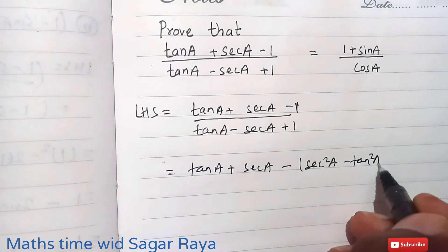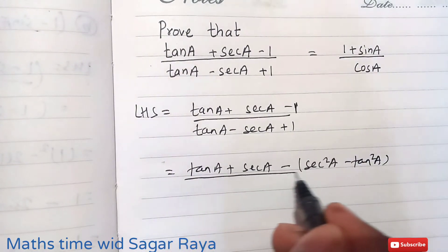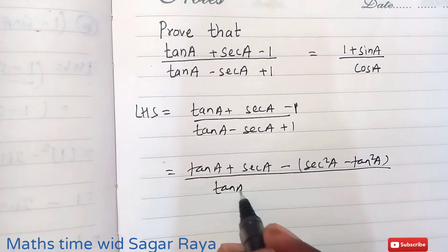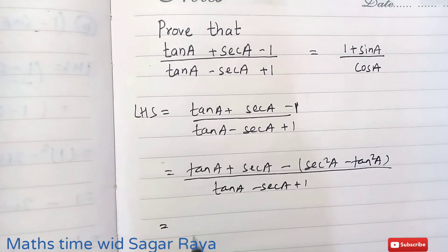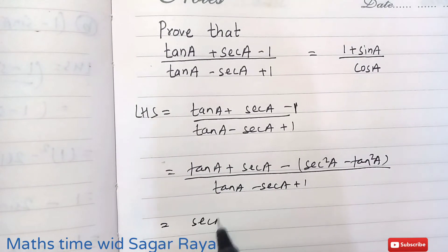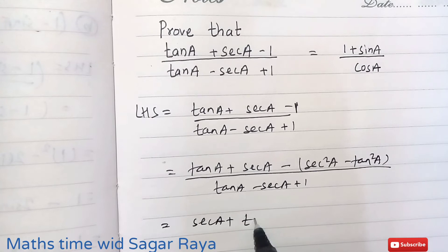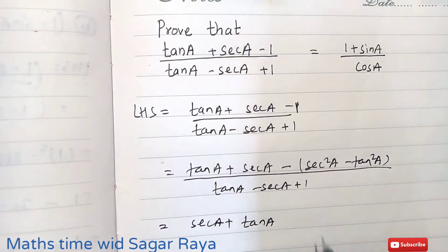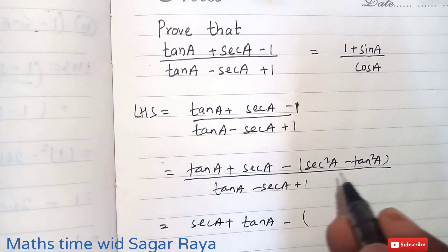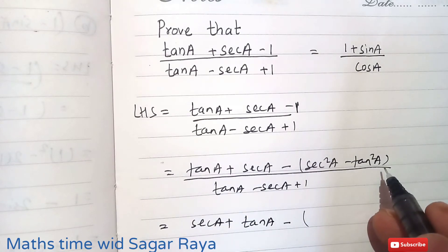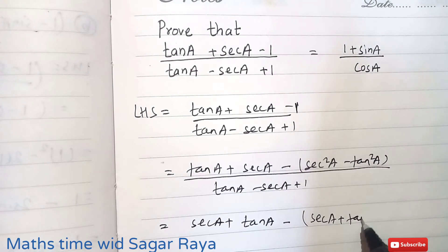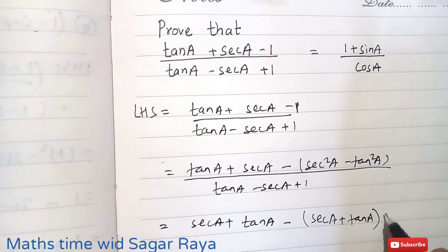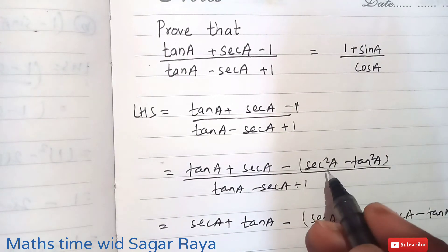Now this tanA + secA I can write as secA + tanA. Then I can change this sec²A - tan²A as (secA + tanA)(secA - tanA), because it is in the form of a² - b².